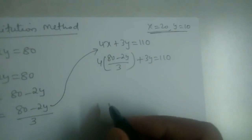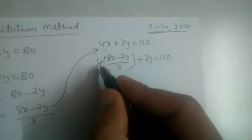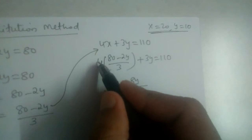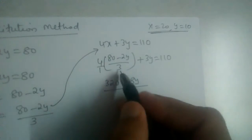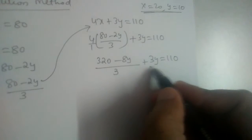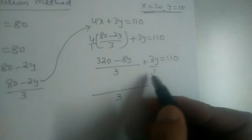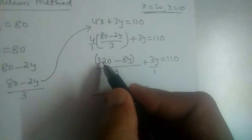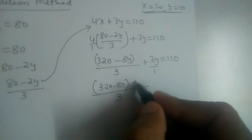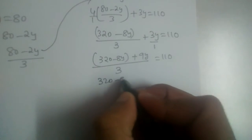Expanding: 4 × 80 = 320, and 4 × 2y = 8y, so we get (320 − 8y)/3 + 3y = 110. To find the LCM, the denominators are 3 and 1, so LCM is 3. Multiplying through: 1 × (320 − 8y) + 3 × 3y = 110 × 3, giving us 320 − 8y + 9y = 330.